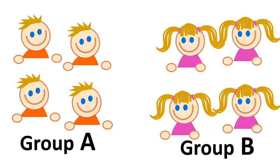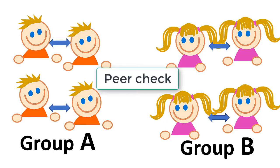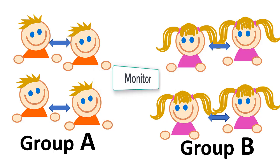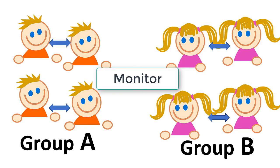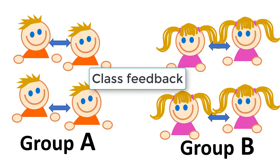At this point they should all have answers to both texts — the one they've read and the one they've been told about. Go back to the original groups and get them to peer check again to make sure they have the answers for the second text. You can monitor at this point to see how they got on, and check answers at the end if necessary, though you probably won't need to.